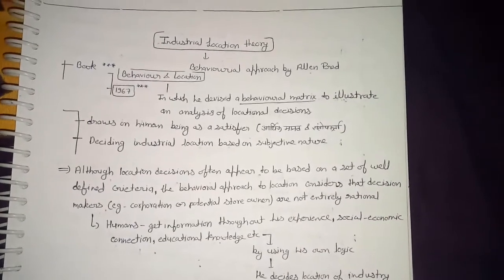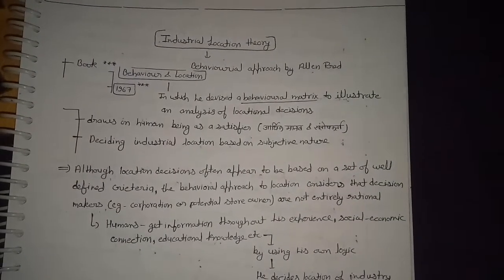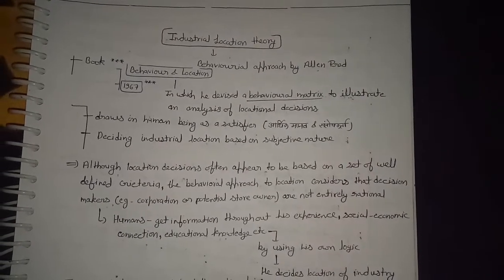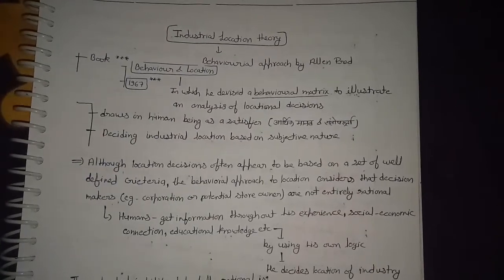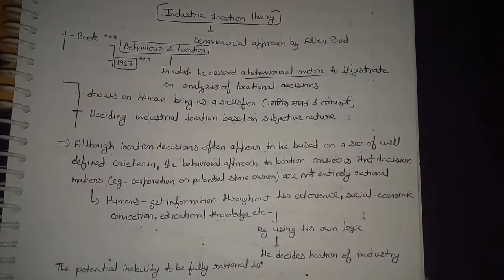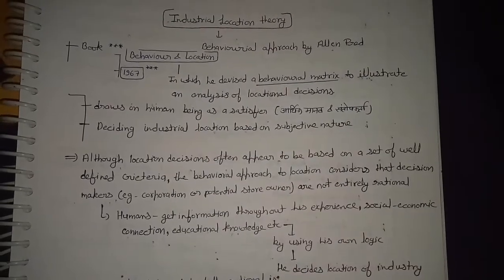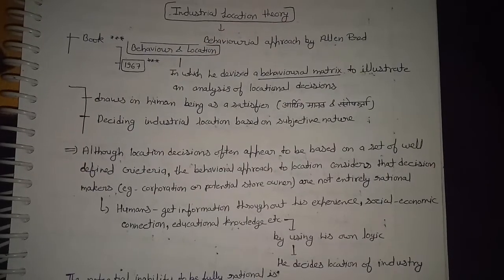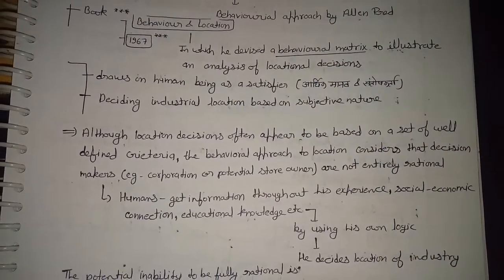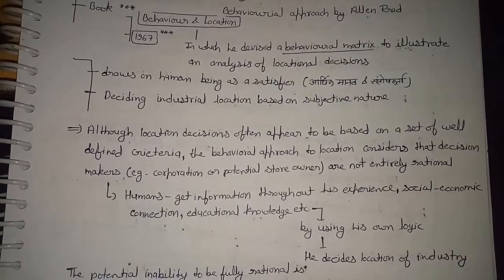We are going to start industrial location theory through the behavioral approach, given by Allan Pred. He said that the behavior of humans matters a lot for deciding a location for industry. He gave industrial location theory in his book 'Behavior and Location' in 1967, in which he devised a behavioral matrix to illustrate an analysis of locational decision.